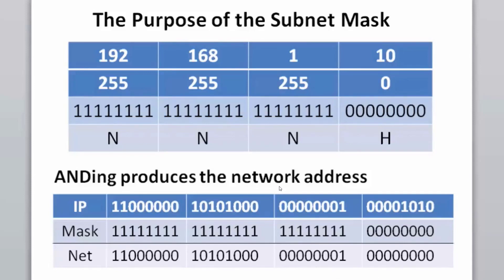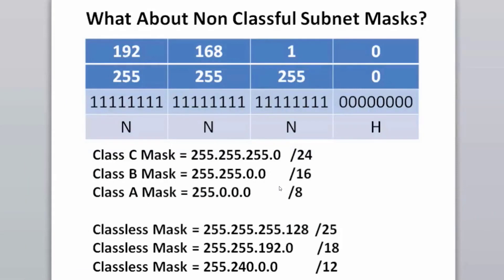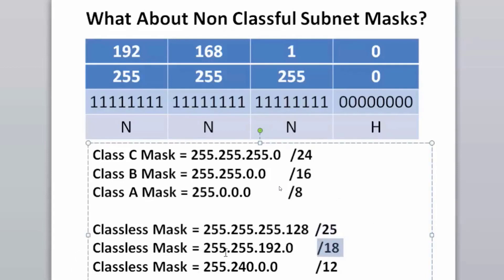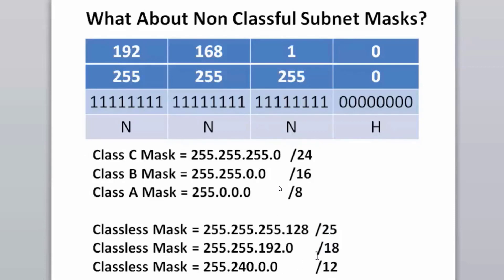This is at the core of IPv4 addressing and subnetting in general. What about non-classful subnet masks? We've seen the class C subnet mask slash 24, the class B slash 16, and the class A slash 8. But what if we use classless masks — like a slash 25, a slash 18 creating 255.255.192.0, or a slash 12 creating 255.240.0.0? This is called subnetting.